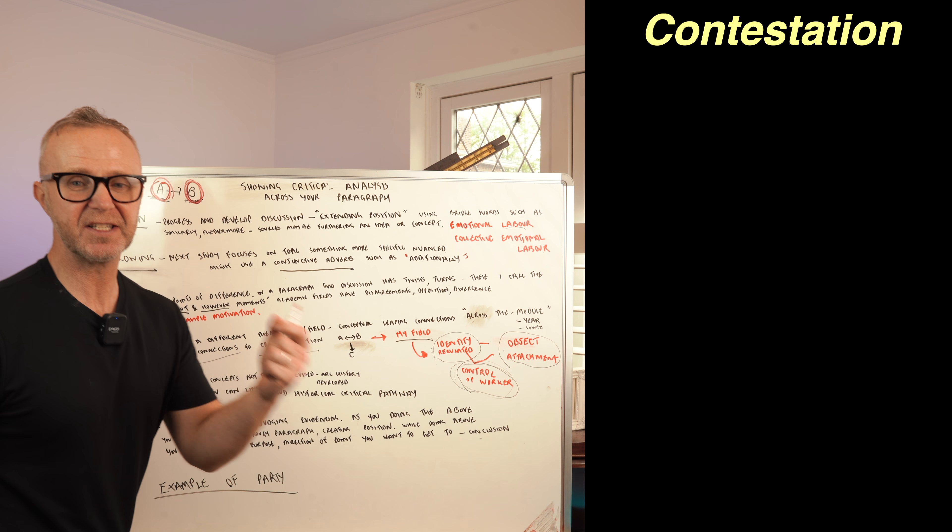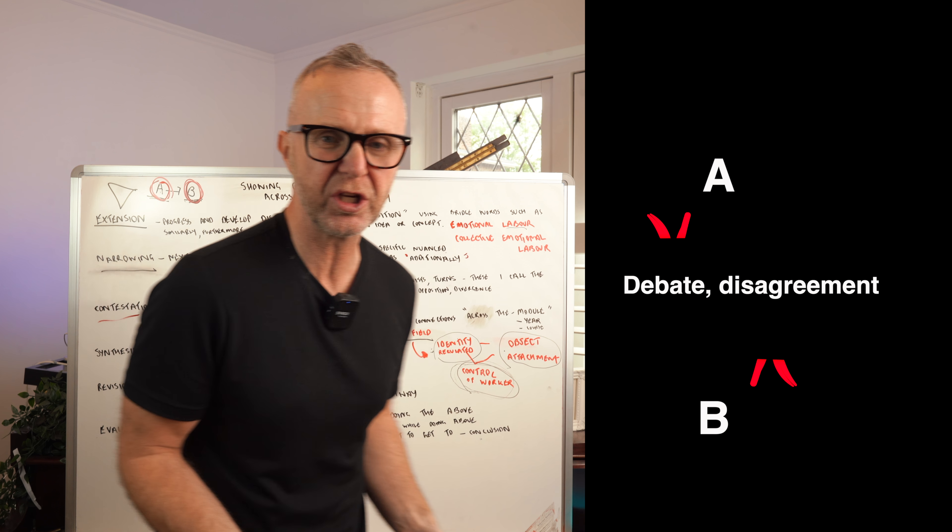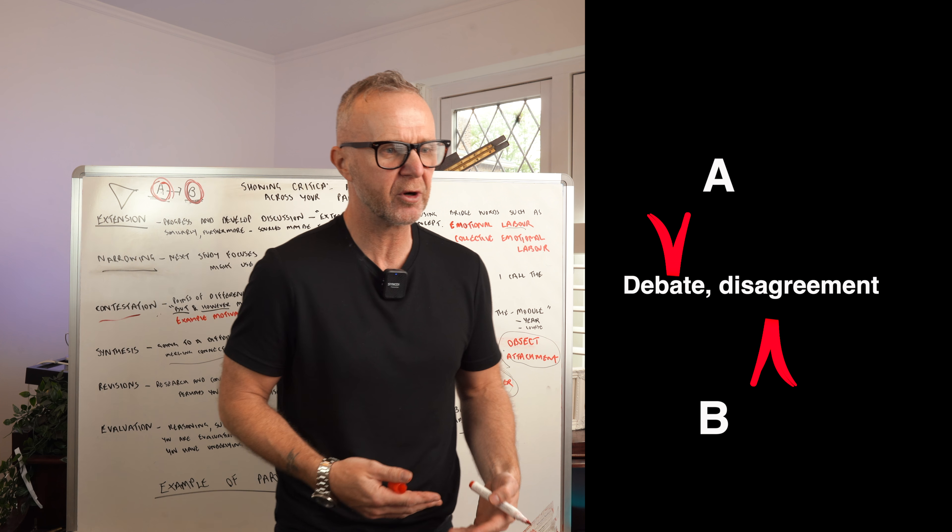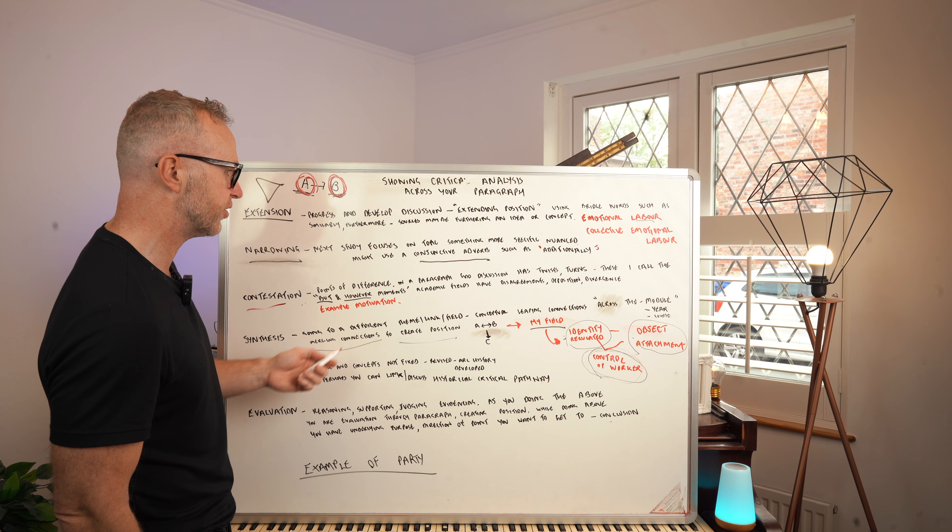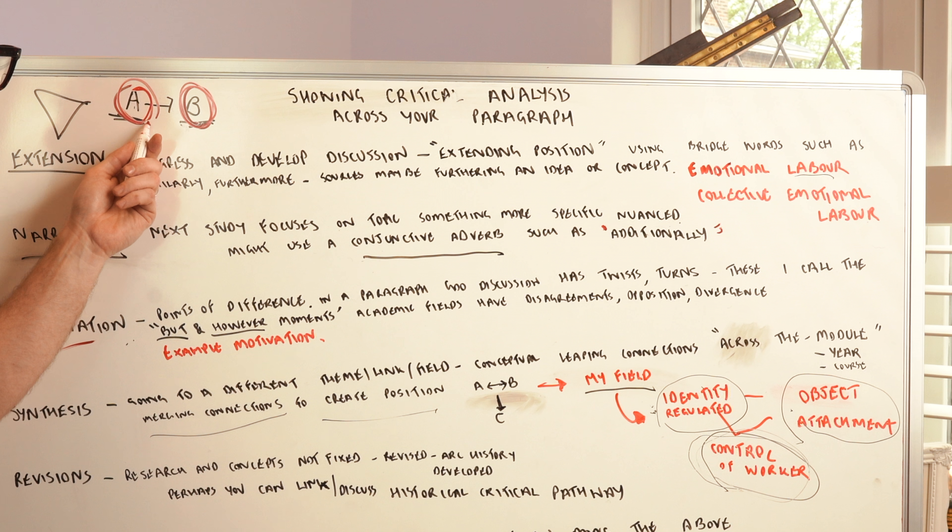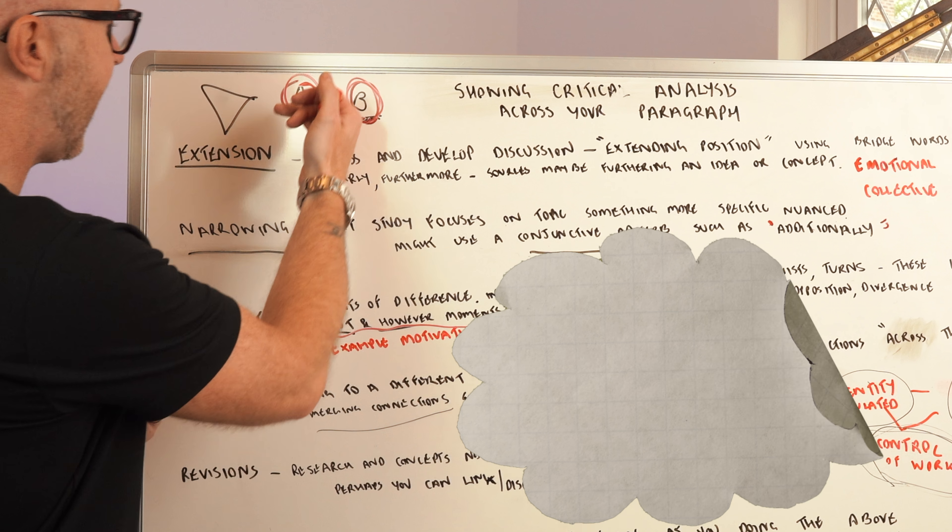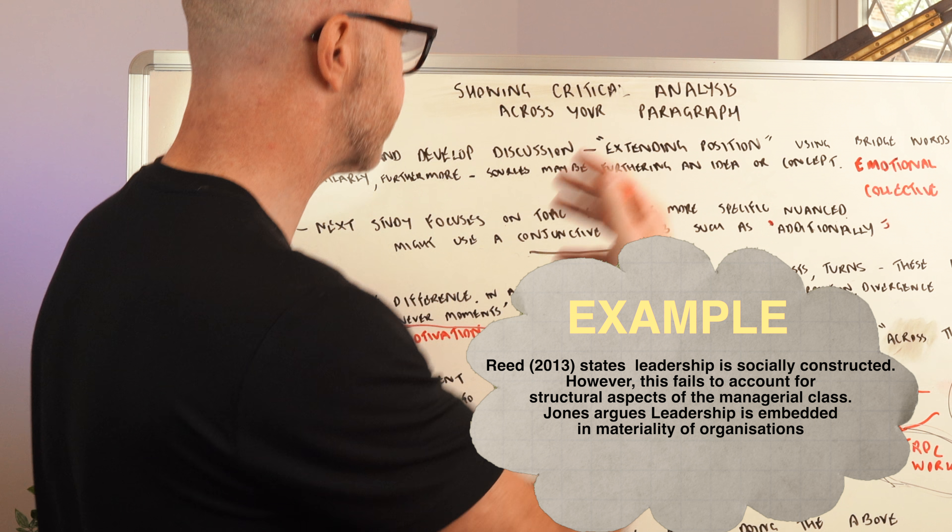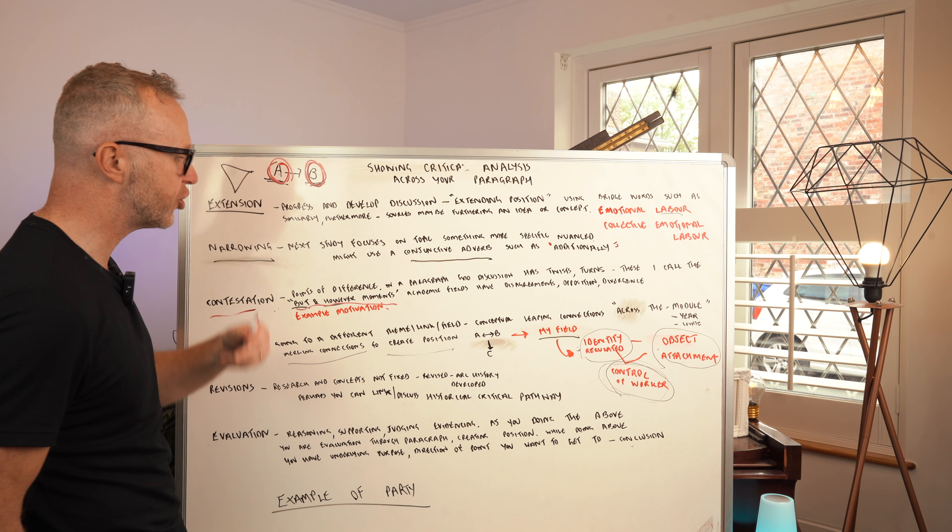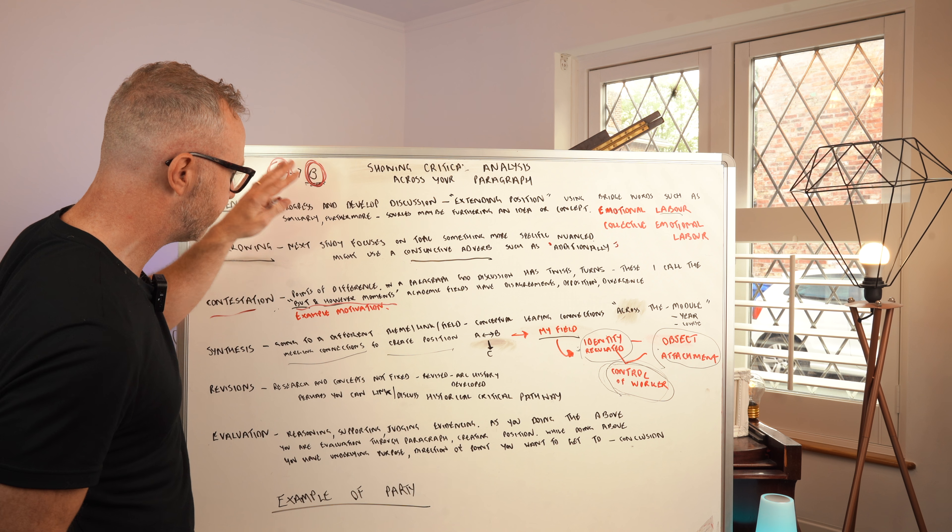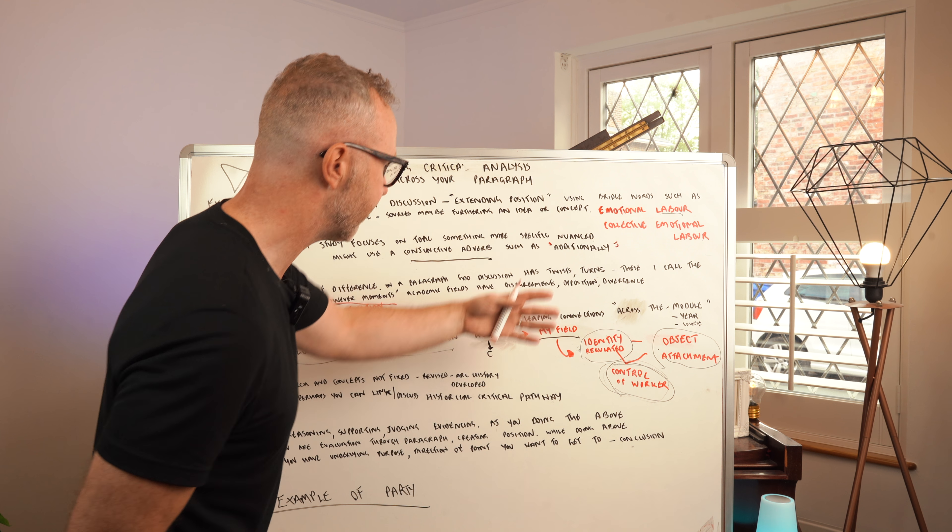Thirdly then we've got contestation, and this is going to mean points of difference across the paragraph. In academic fields there's always raging debate and arguments and discussion, and we can think of a paragraph as almost like twists and turns and oppositions that might be found in your different sources and the topic that you're discussing. If we think about how you might link them if there's opposition, I like to call them the but or the however moments. A is saying this, however B in their research suggests this, or but B has gone on to look at it this way. You're showing the nuanced, critical, active, purposeful engagement with sources and demonstrating that it's a divergent field.